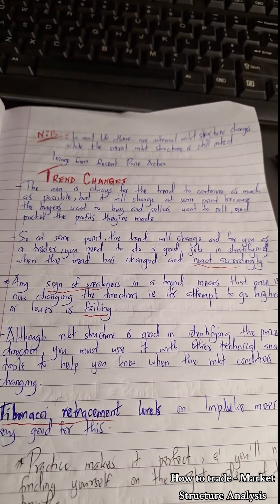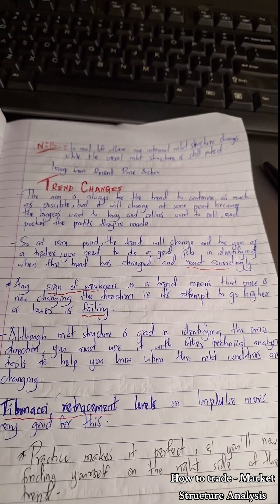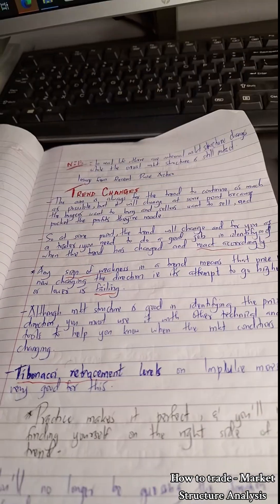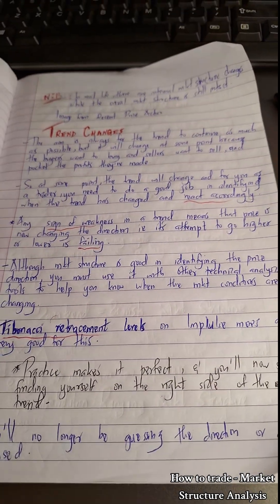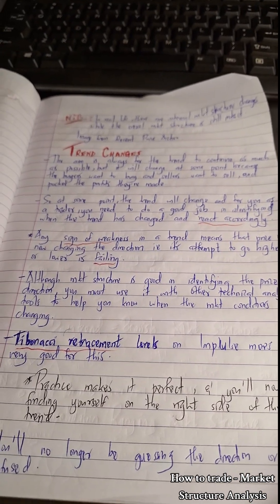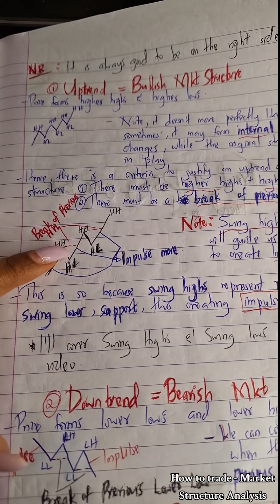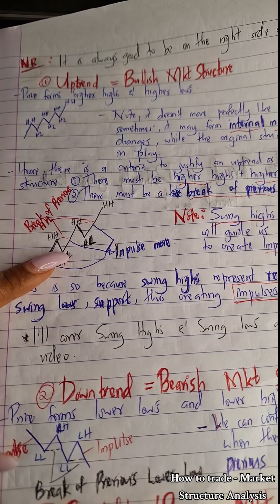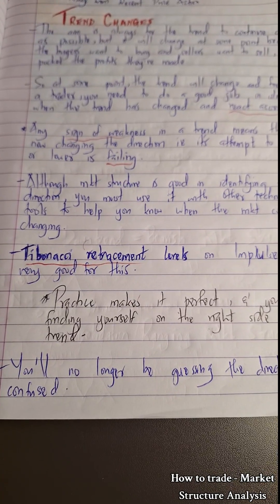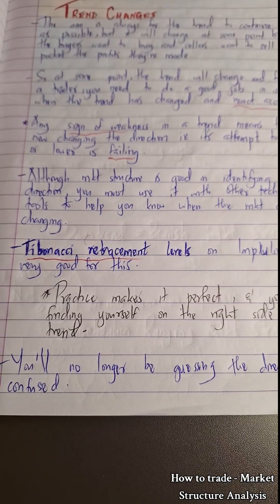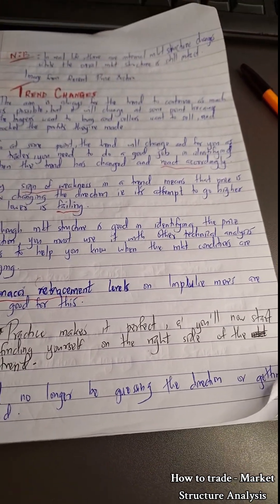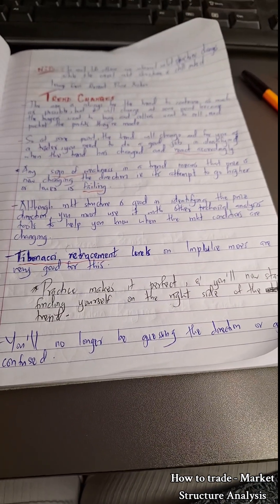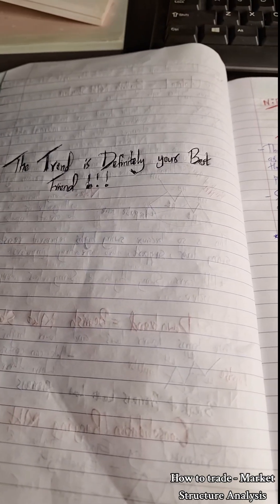Although market structure is good for identifying price direction, you must use it with other technical analysis tools to know when market conditions change. One of those tools is the Fibonacci tool — Fibonacci retracement levels on impulse moves are very good for this. This Fibonacci level here will show you if the trend is strong or weak. Practice will make it perfect, and you'll find yourself on the right side of the market.